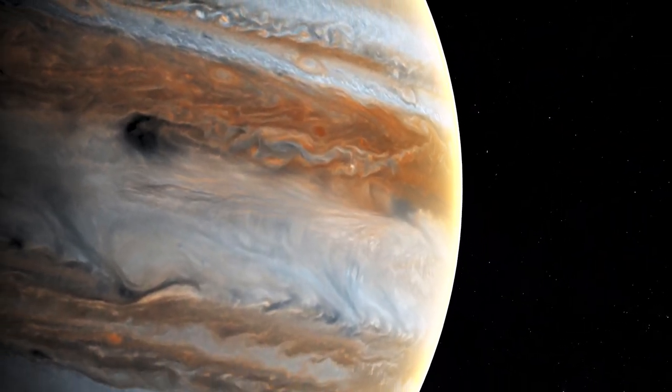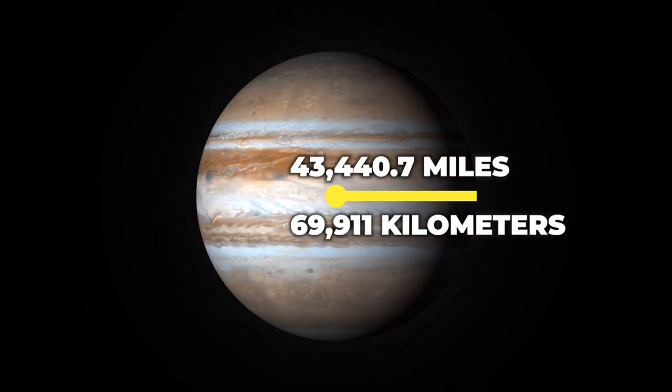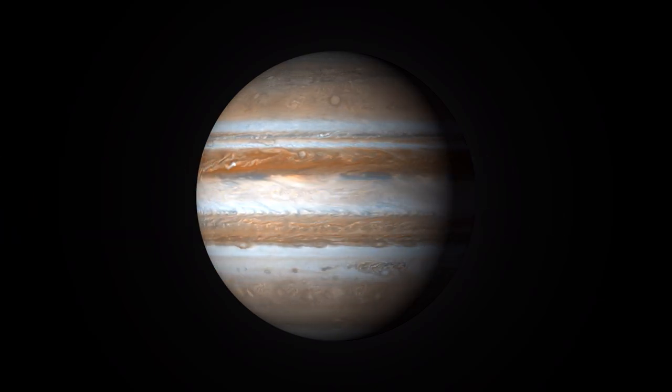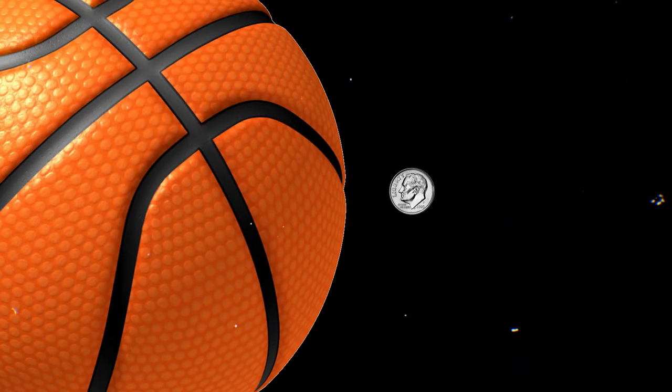Jupiter is the biggest planet in our solar system. With a radius of 43,440.7 miles, Jupiter is 11 times wider than Earth. If Earth was the size of a nickel, Jupiter would be about as big as a basketball.